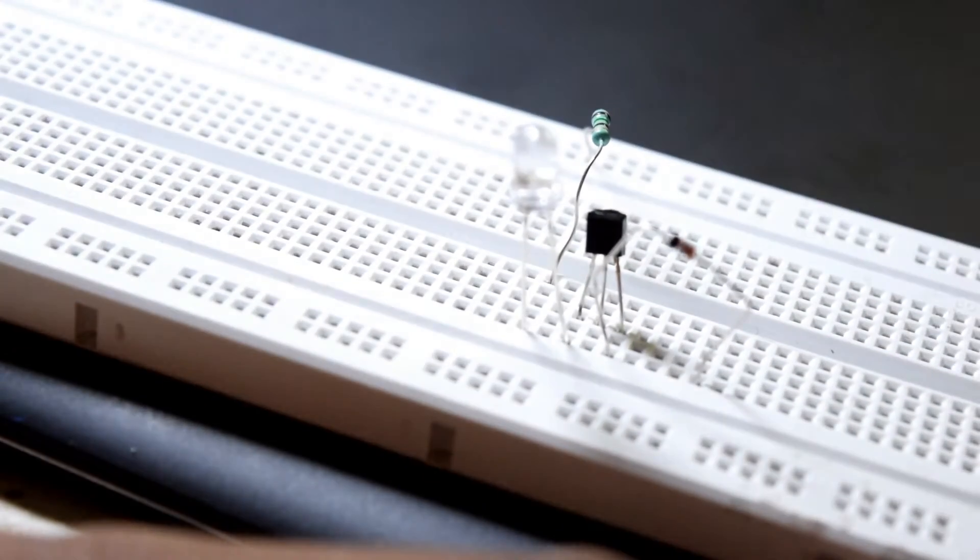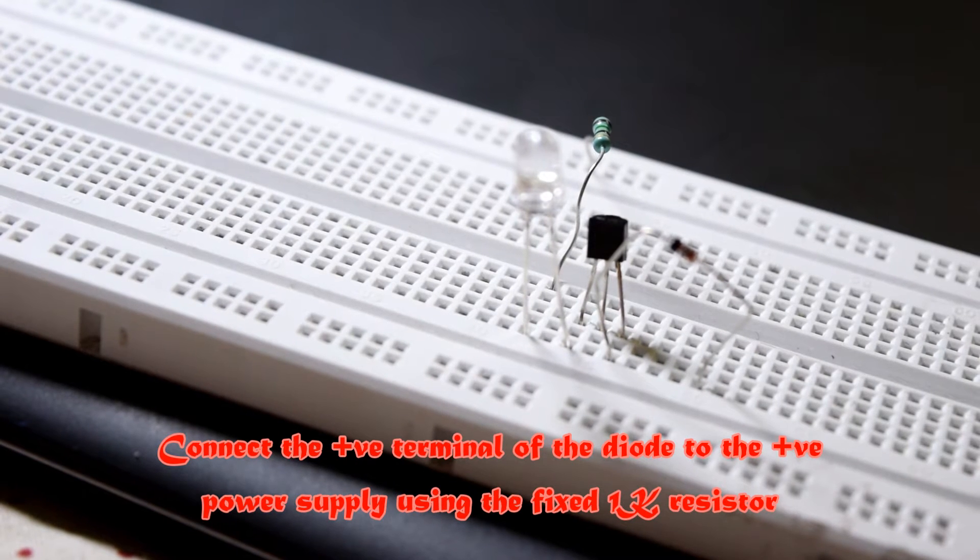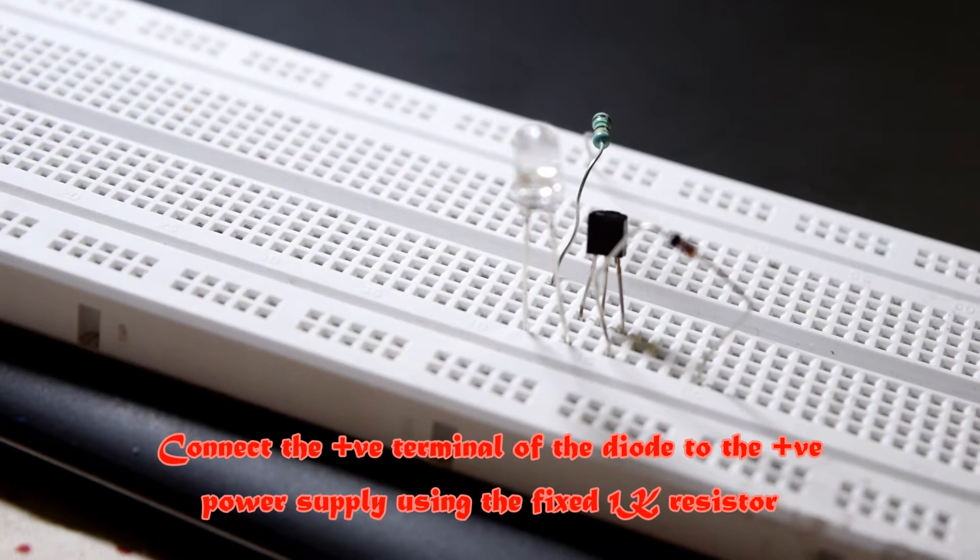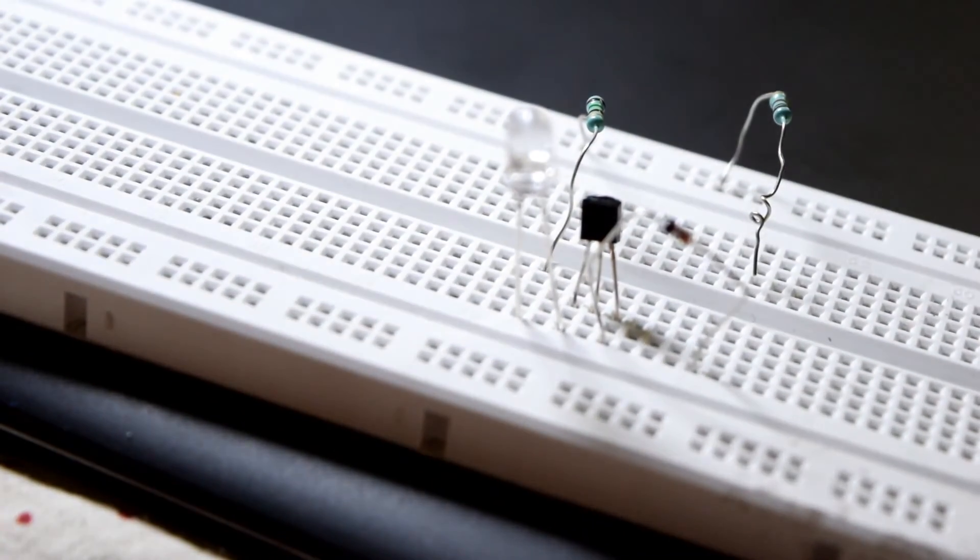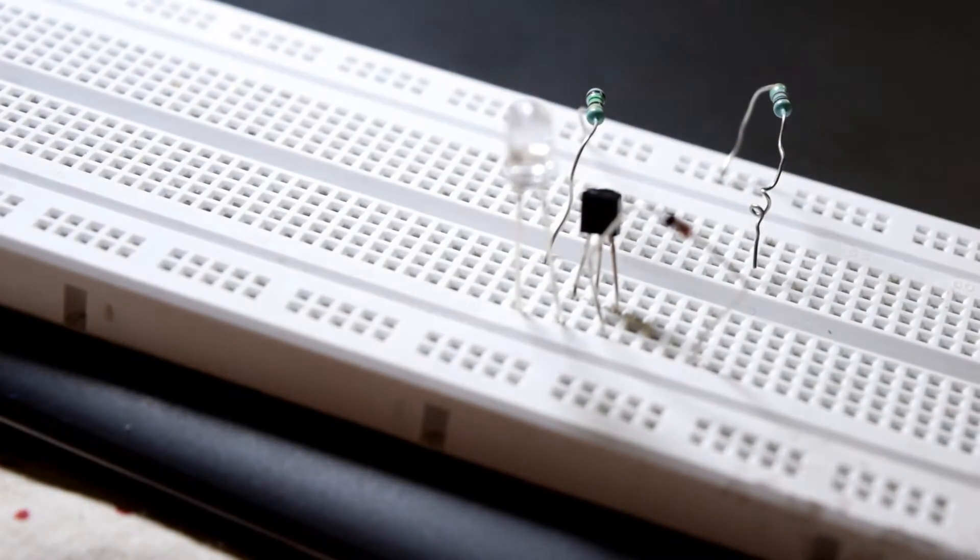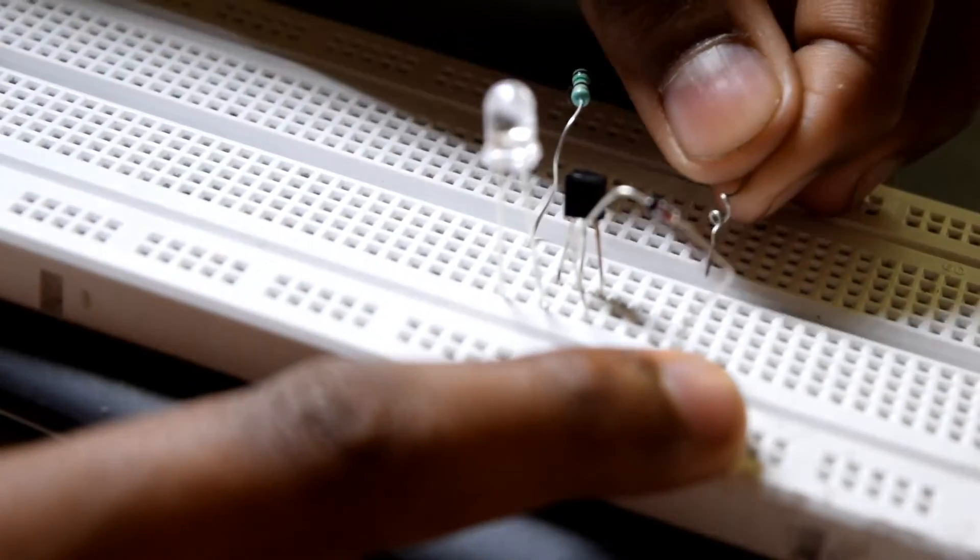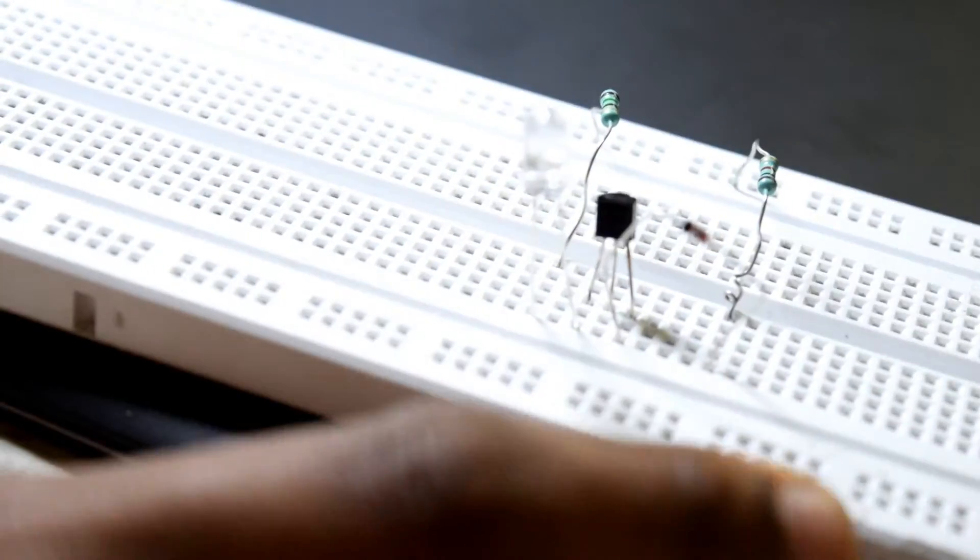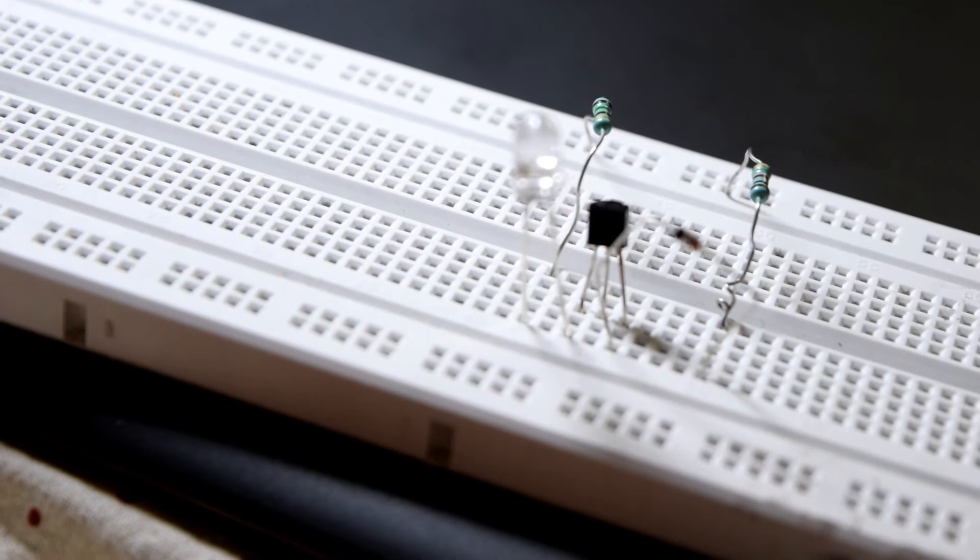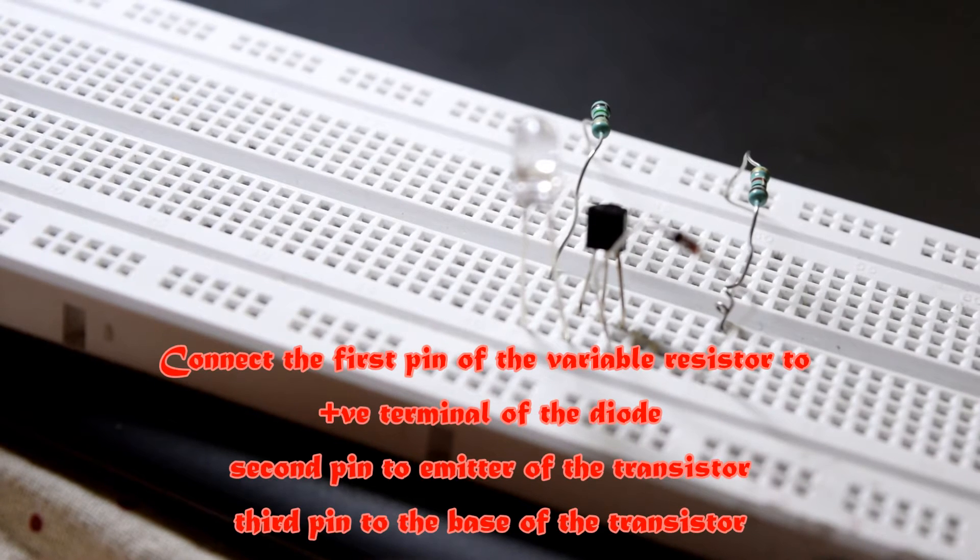After doing this, take your fixed 1K resistor, connect its one terminal to the positive rail and the other terminal to the positive terminal of the diode like this.